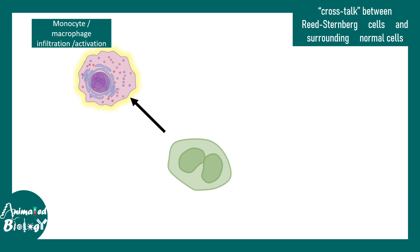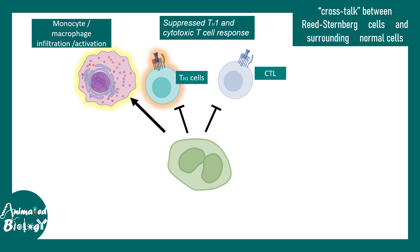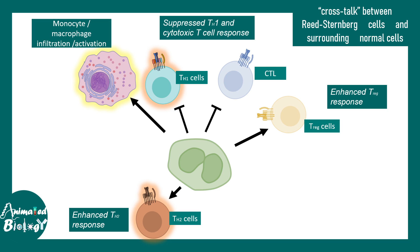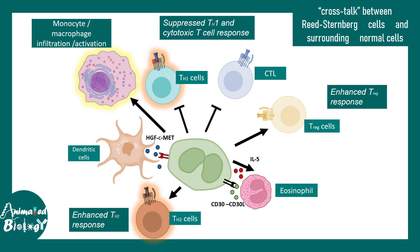Reed-Steinberg cells can interact with a plethora of immune cell types. They interact with monocytes and macrophages leading to their activation. They can suppress inflammatory Th1 cells and CD8-positive cytotoxic killer cells, while promoting Th2 subtype activity. They also activate T regulatory cells, which overly reduce inflammation and suppress Th1 responses, making the tumor microenvironment safe for the tumor. Enhanced T regulatory cell response is a bad sign in tumor development. Reed-Steinberg cells also interact with eosinophils via interleukin-5 and CD30 ligand, and with dendritic cells.